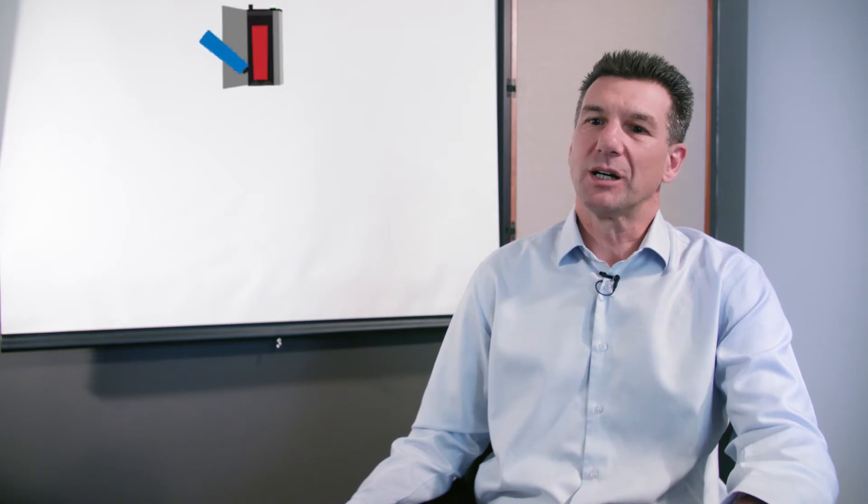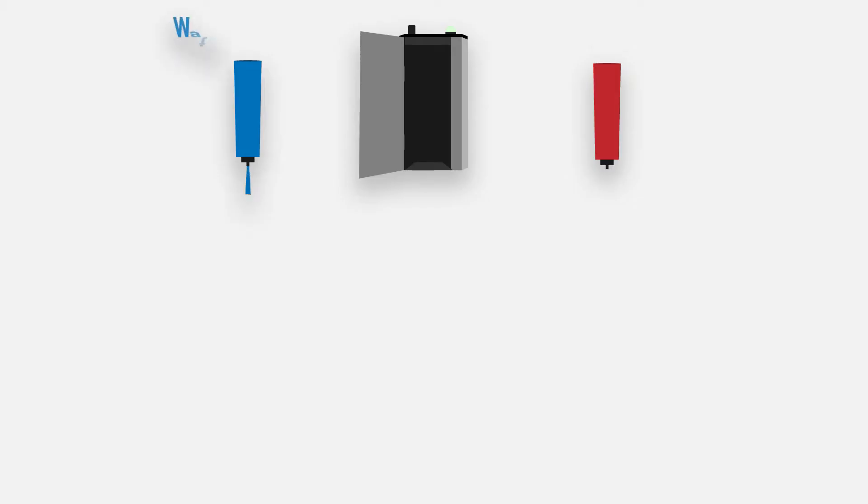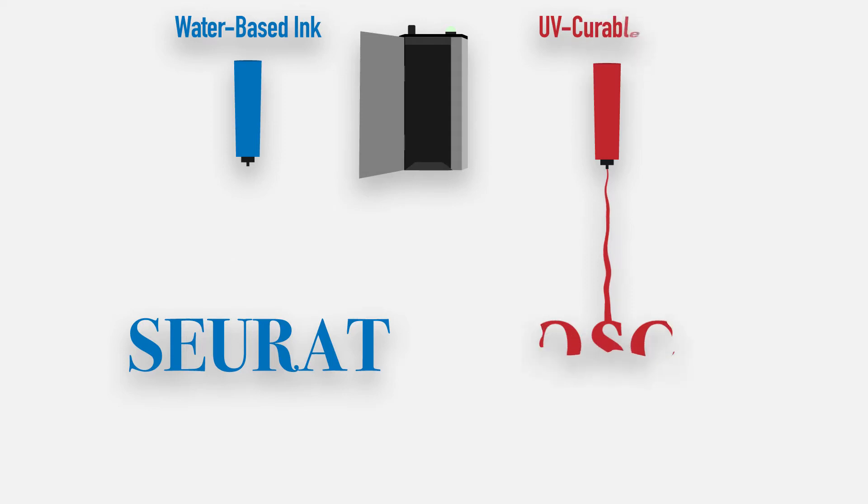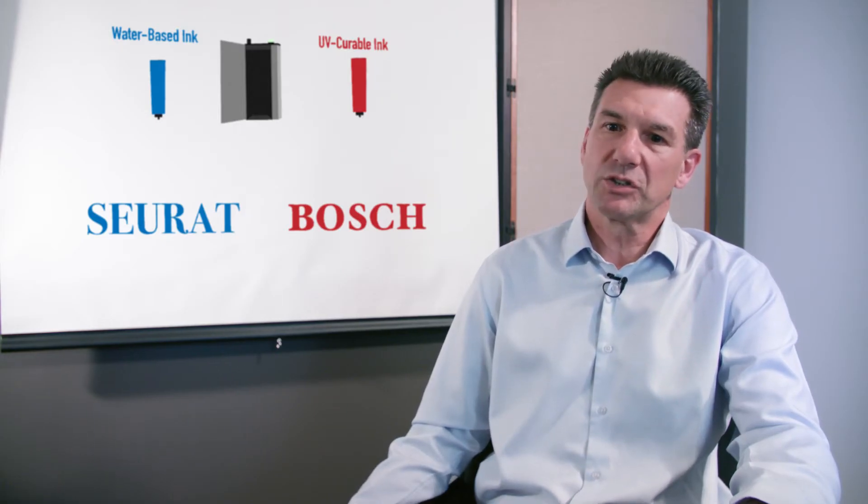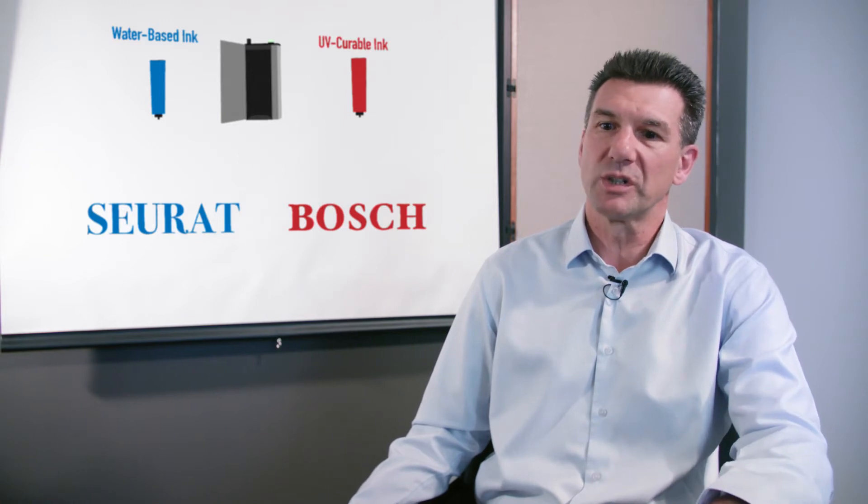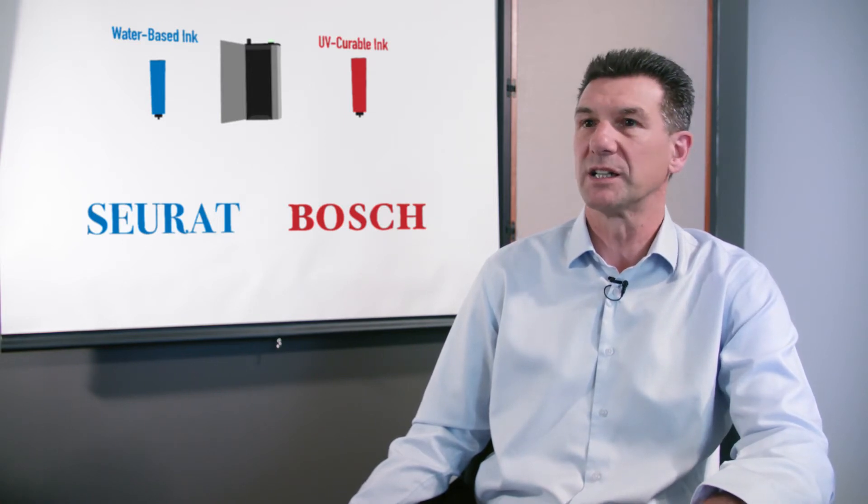The Quantum system comes with two distinct inks: our water-based inks, which we call Serrat, and Bosch, our UV curable ink. We provide these two inks to allow you to tailor the ink choice to meet the substrates that you're printing on.